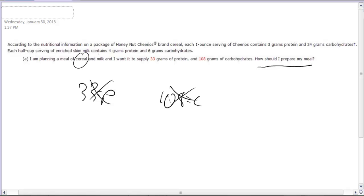So what they're saying is, how should you prepare your meal? How much cereal and how much milk should I be eating and drinking? So our variables should be C and M for number of servings of Cheerios, number of servings of milk. I hope that makes sense.